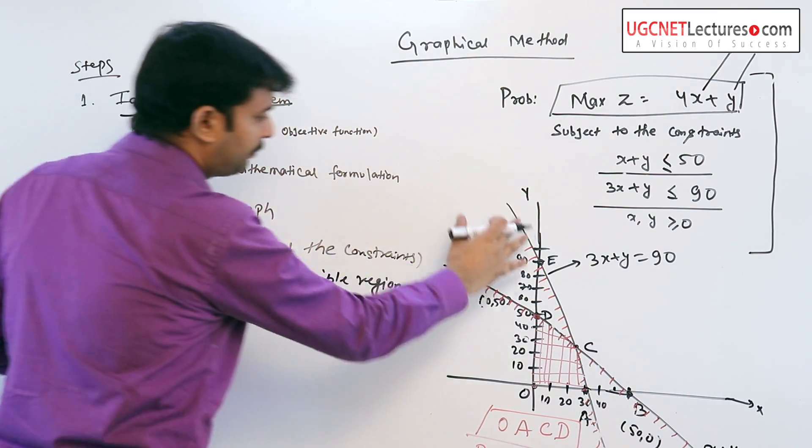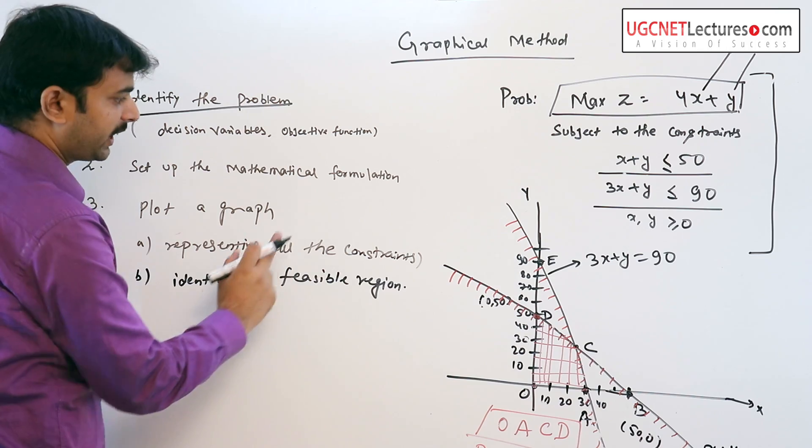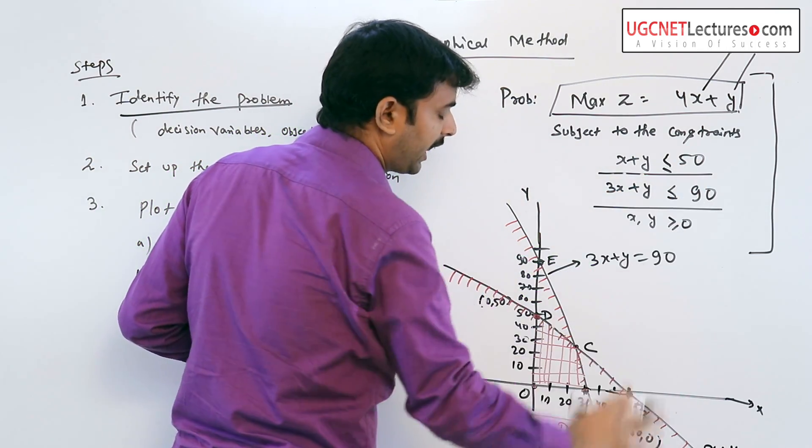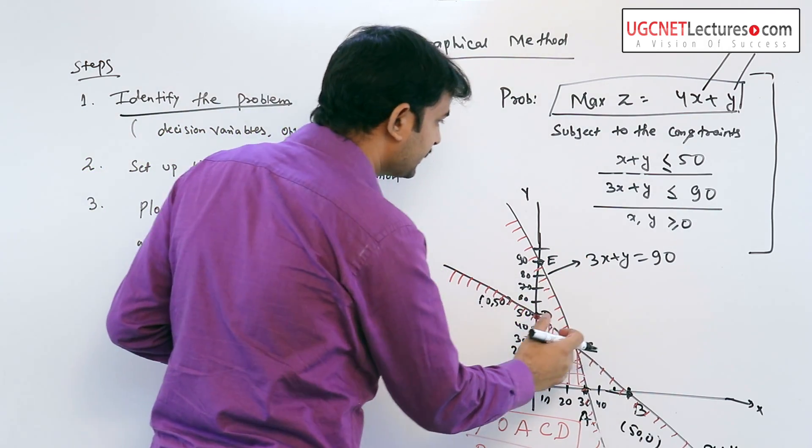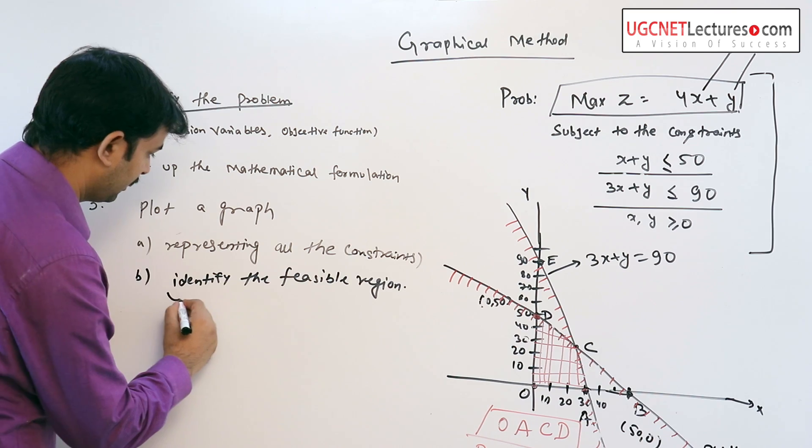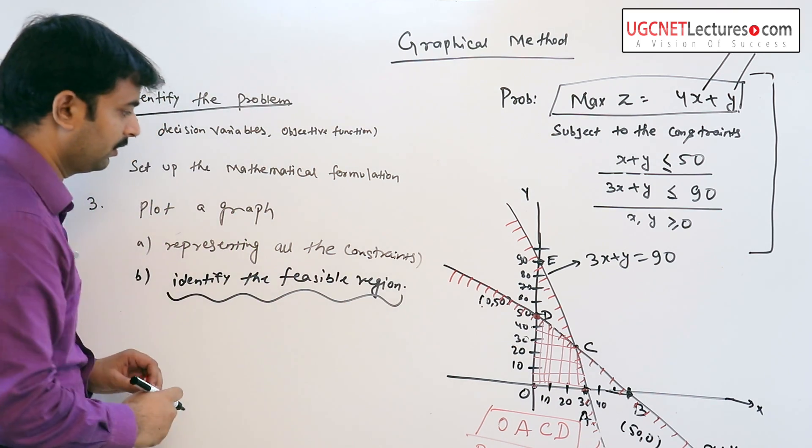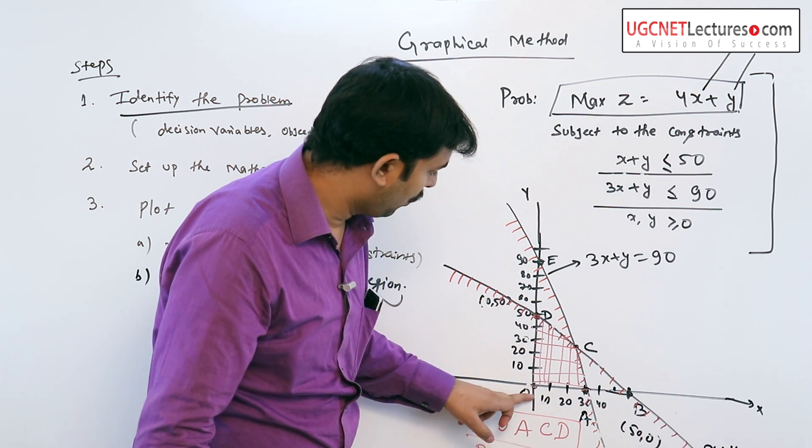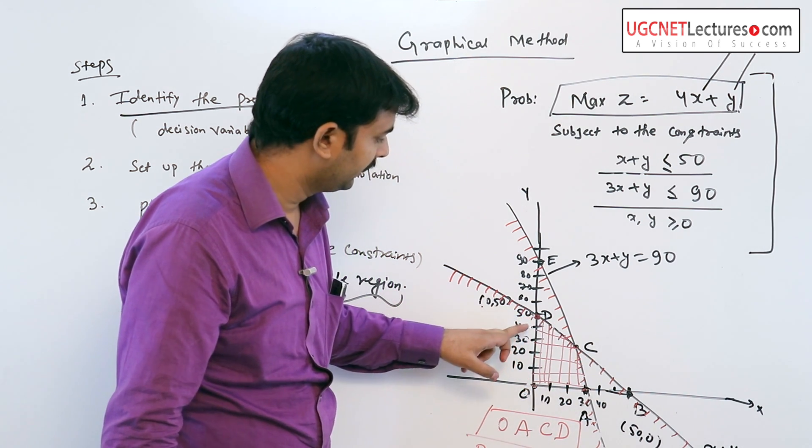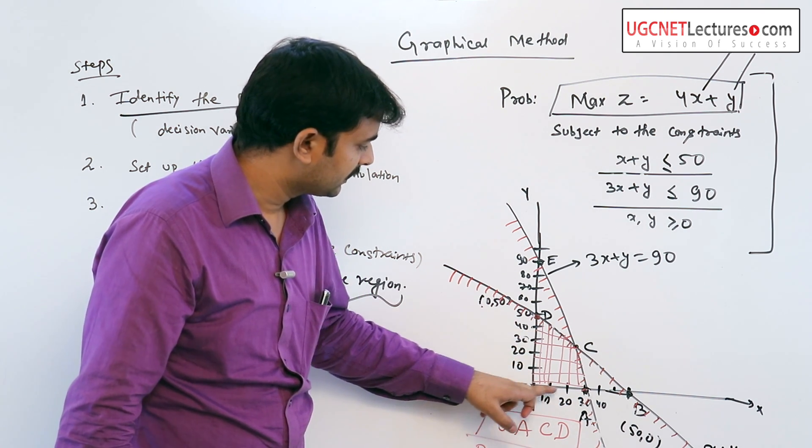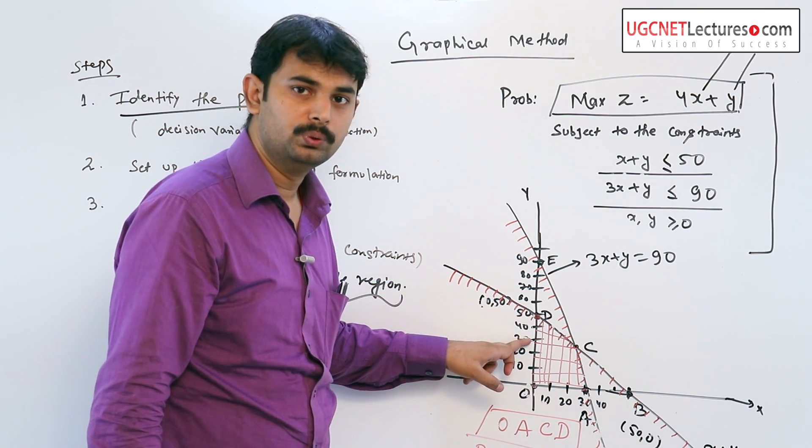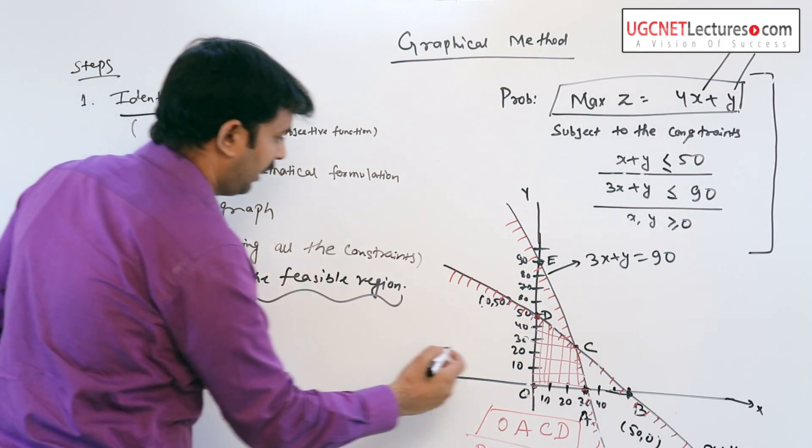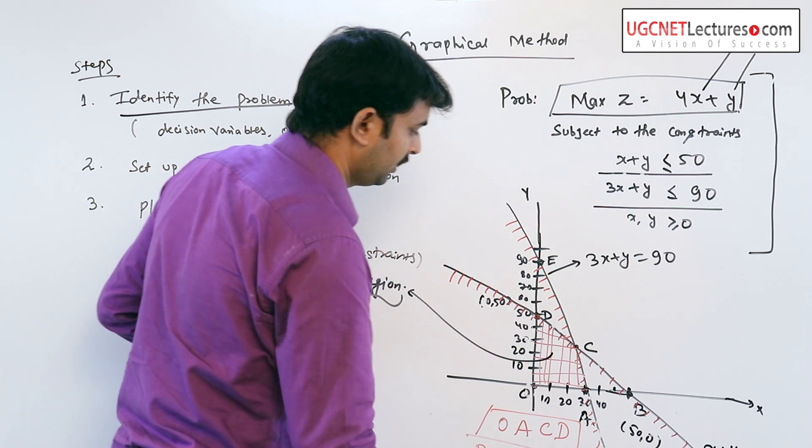So the third point, we already plotted a graph of the constraints - the x plus y equals 50 line and 3x plus y equals 90 line. The region which is our concern is OACD because this region satisfies all the two equations. So this region is known as the feasible region.